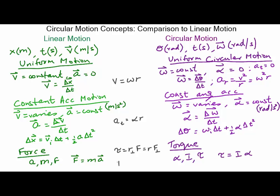Moment of inertia is related to mass in the sense that it is the sum of all masses times the square of their distance from the pivot or rotation axis. The units: mass is in kilograms, force in kilogram meters per second squared — called the Newton. Moment of inertia is measured in kilogram times meter squared, and torque is measured in Newton meters, or kilogram meter squared per second squared.